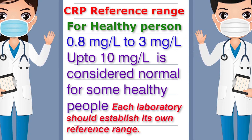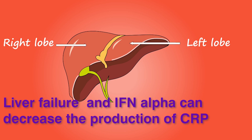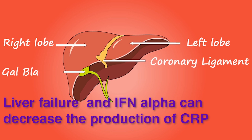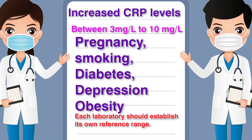In healthy adults, the normal concentration of C-reactive protein varies between 0.8 mg/L to 3 mg/L, and in some healthy individuals this can go up to 10 mg/L. Decreased levels of CRP are seen in liver failure because the liver produces CRP. Interferon-alpha also inhibits CRP production from the liver.